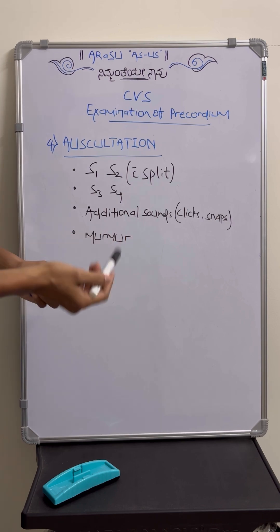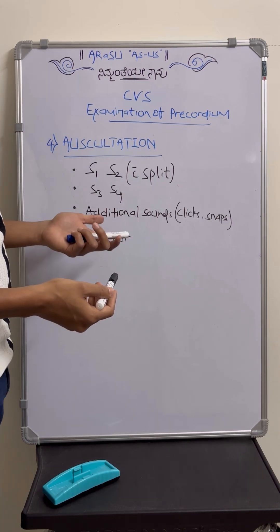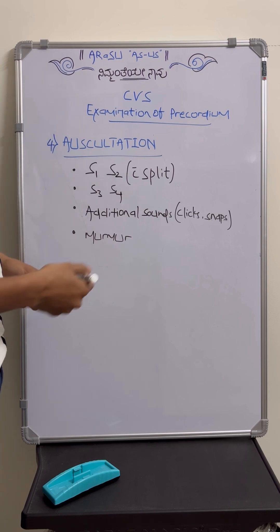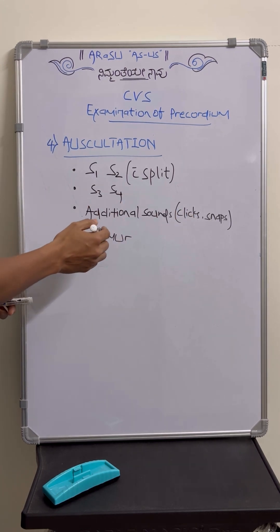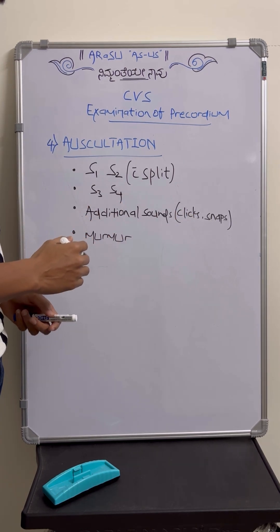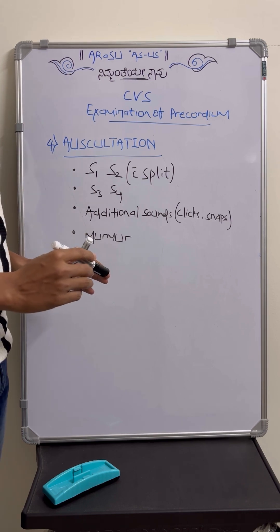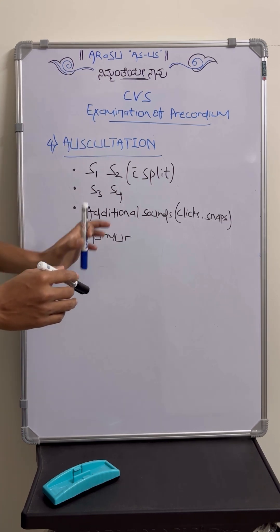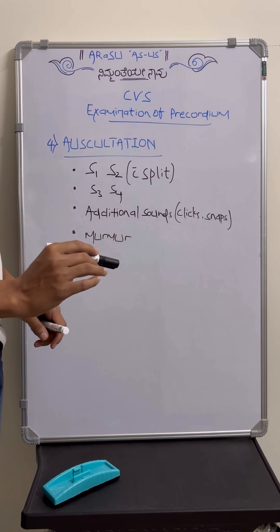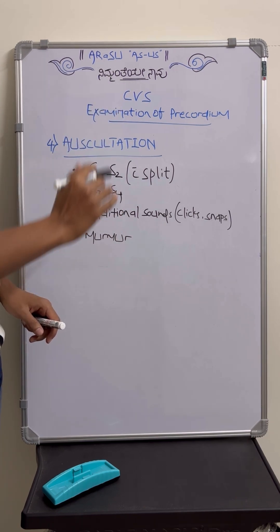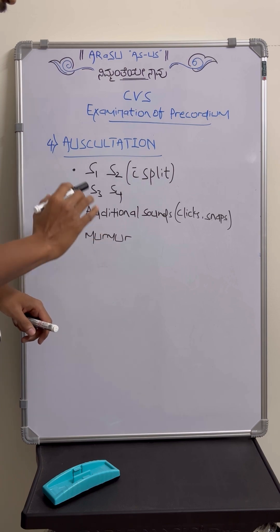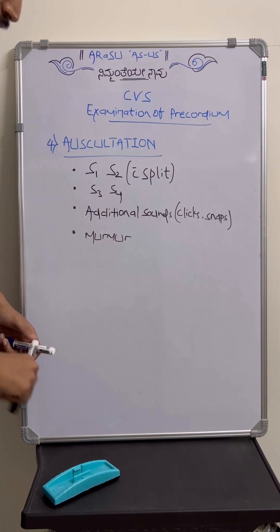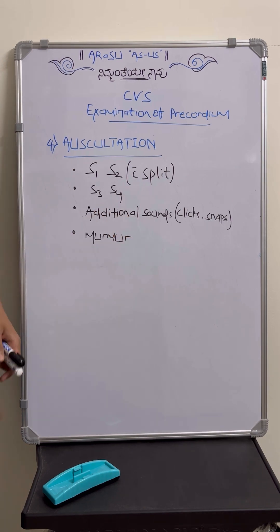Next, mention any additional sounds — mainly clicks such as ejection systolic click, and snaps like opening snap in mitral stenosis. At the end, describe any murmur. There is a specific pattern to follow when describing a murmur — just follow that pattern and you don't need to worry about finding the exact murmur. No one will scold you for a mistake in murmur identification.